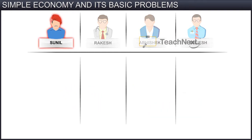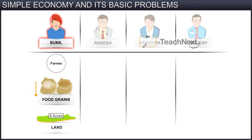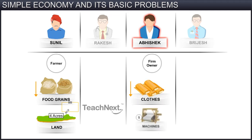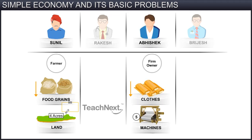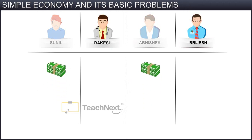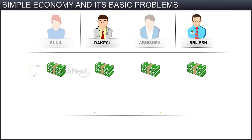Finally, they discover that Sunil, who is a farmer, could not produce more food grains with just four acres of agricultural land. And Abhishek, who is a firm owner, could not produce more clothes with just five machines. So when they sold their products in the market, they actually earned a limited amount of money. Further, the incomes of the doctor and teacher are also limited compared to their needs.